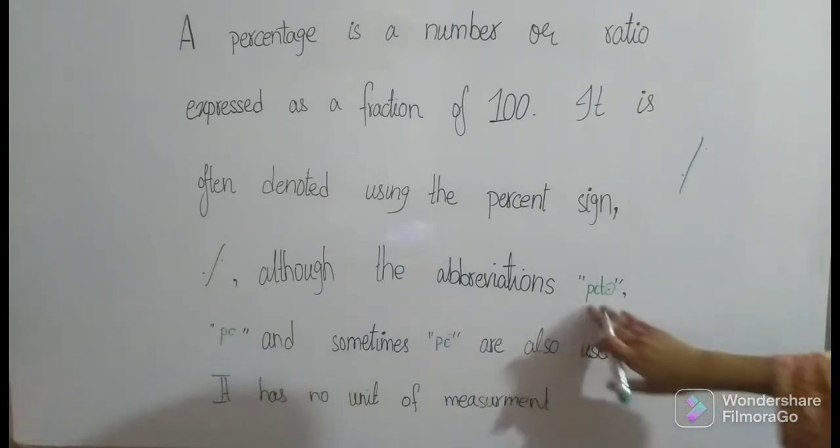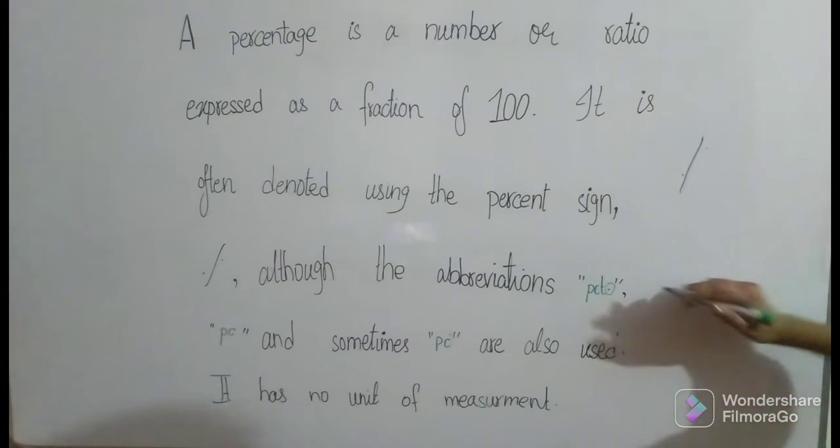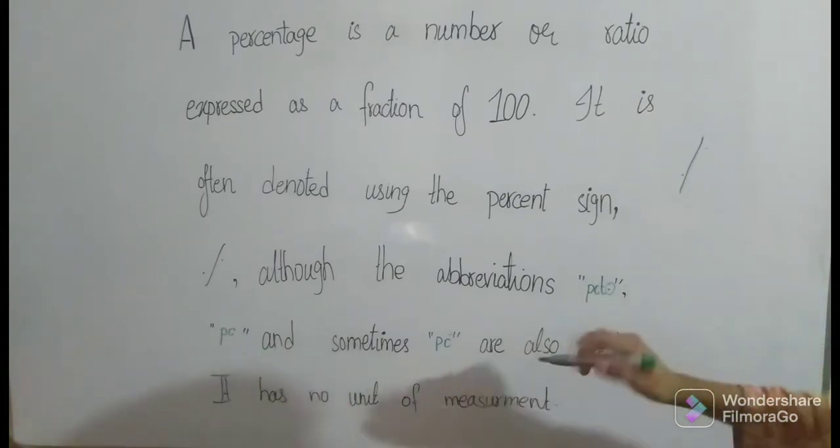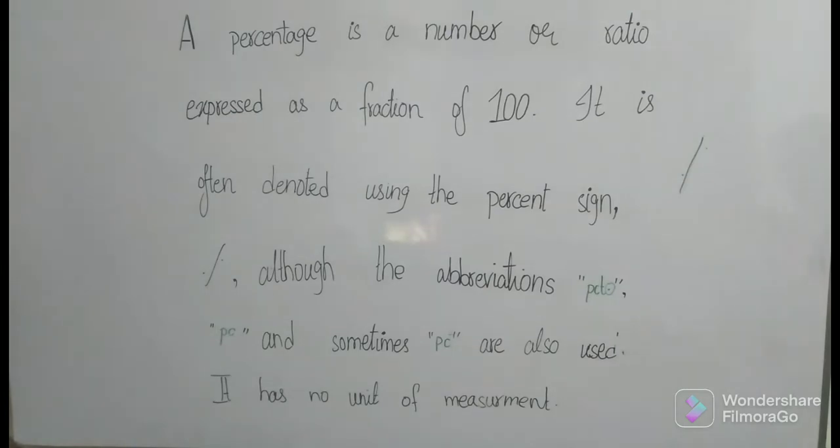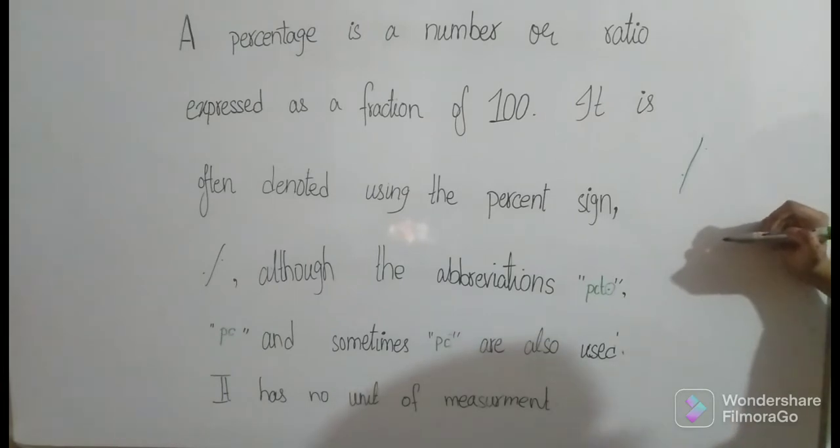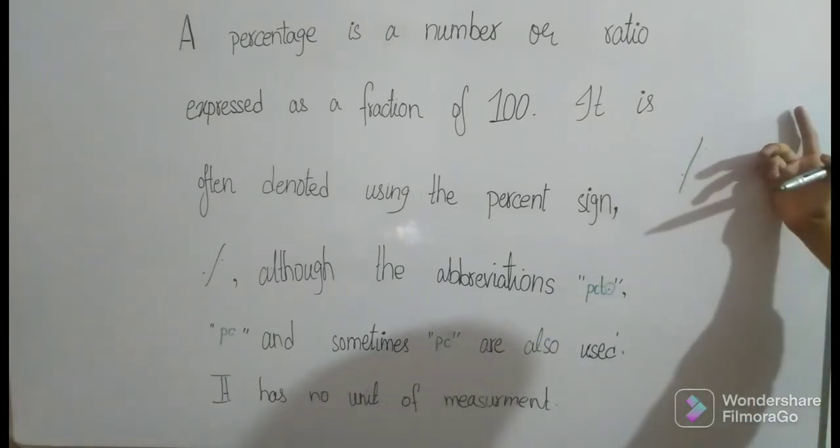Now here, what's the difference between this and this? Here there is a dot after t, and here there isn't: pct and p.c.t. are also used. Percentage is a dimensionless number and it has no unit of measurement.